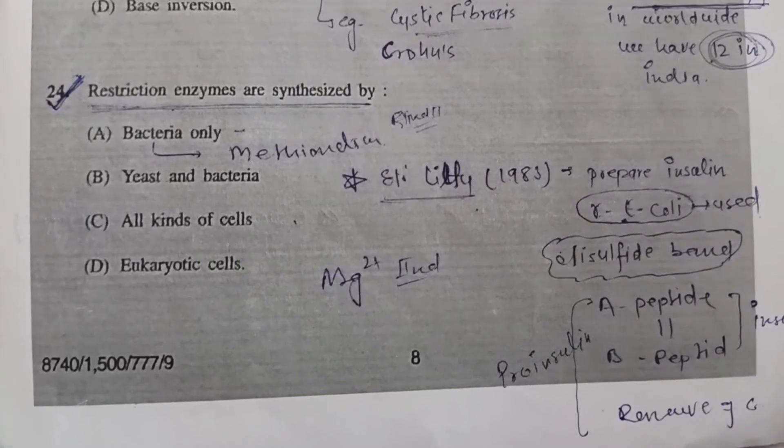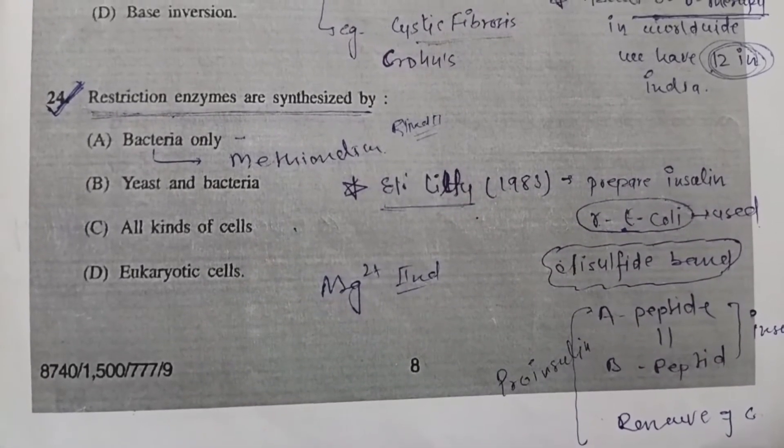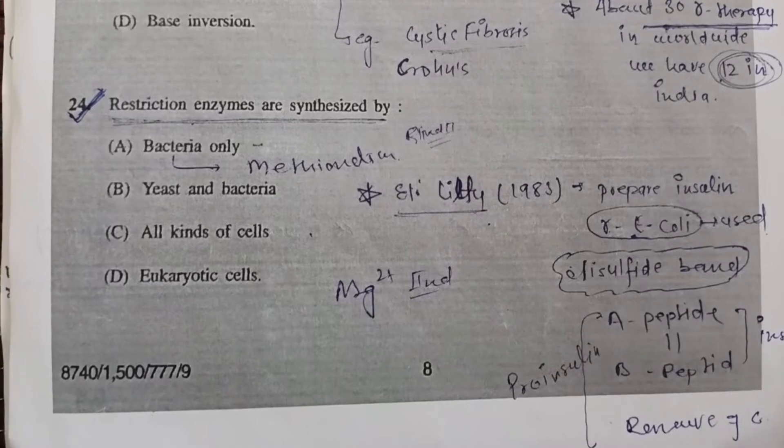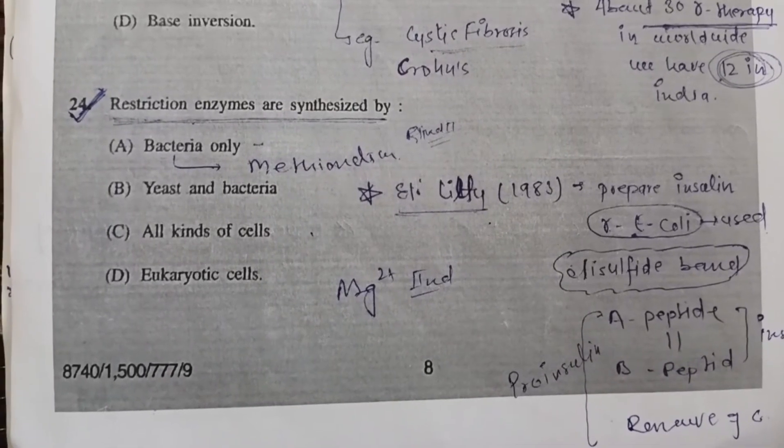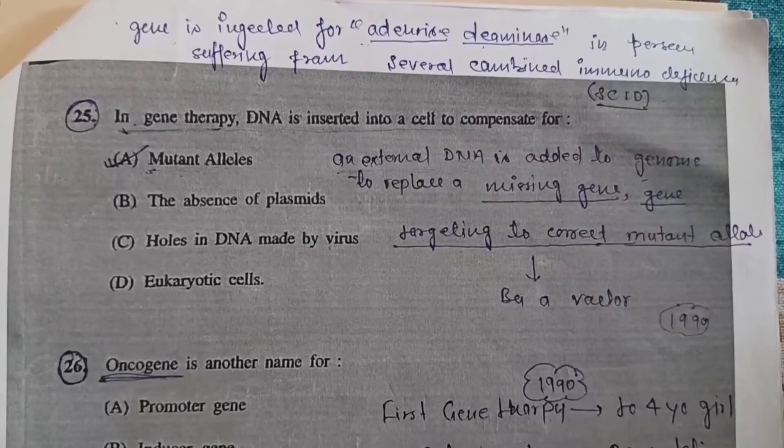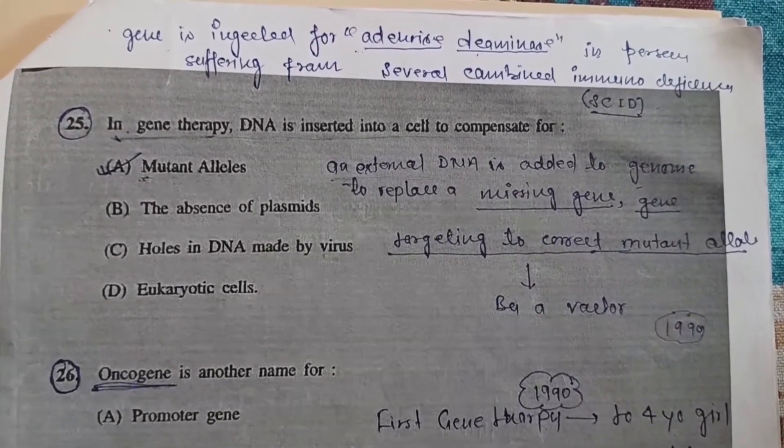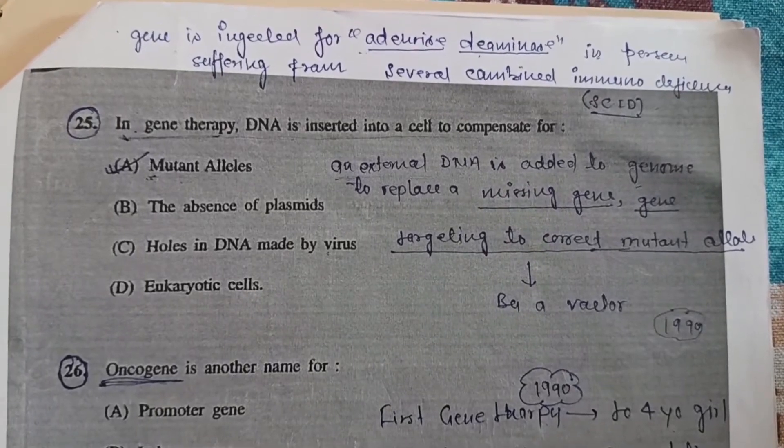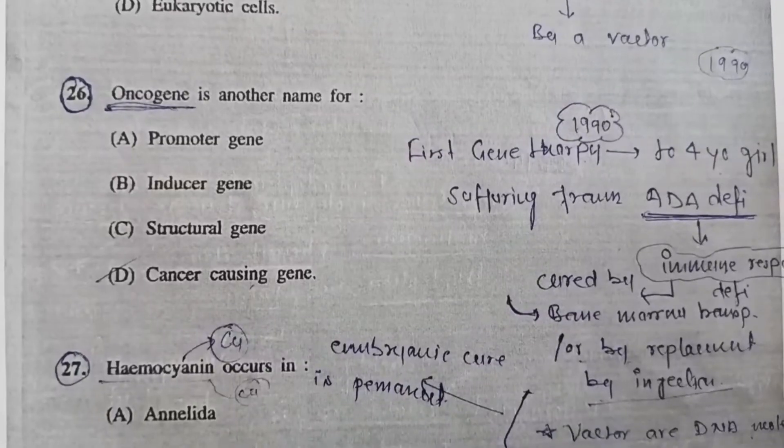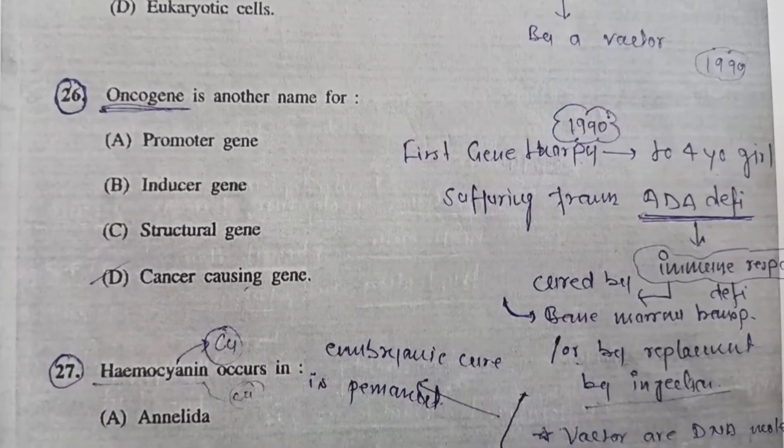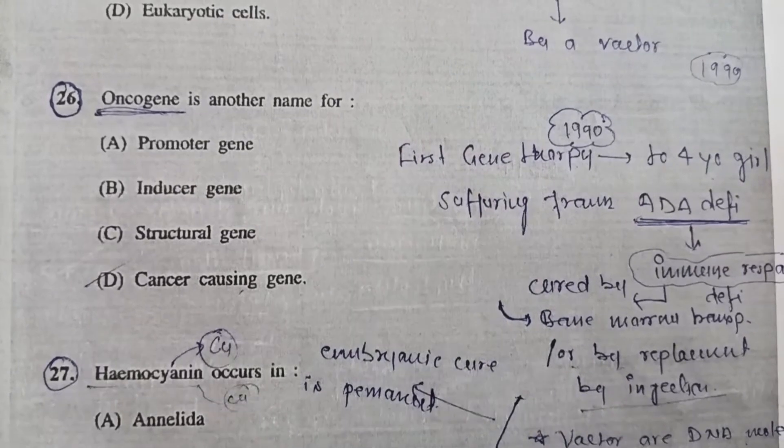Question 24: Restriction enzymes are synthesized by - Option A, bacteria only, by the process of methylation. Question 25: In gene therapy, DNA is inserted into a cell to compensate for mutant alleles. Question 26: Oncogene is another name for - Very simple, cancer-causing gene.